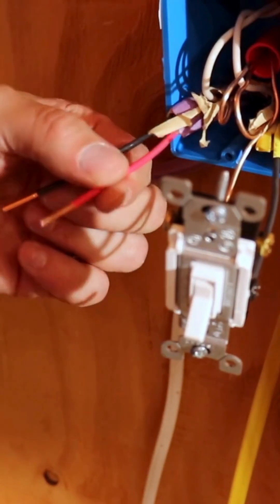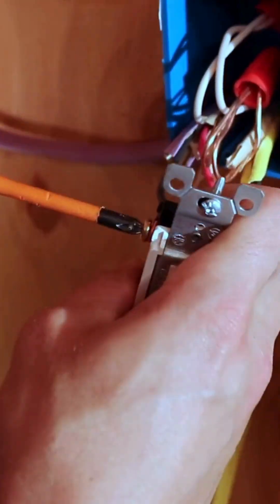And last, we can connect the remaining two wires from the 12-3 to the traveler terminals, which are the brass terminals on your three-way switch.